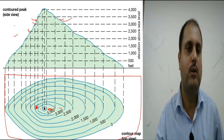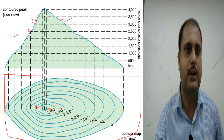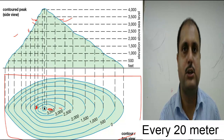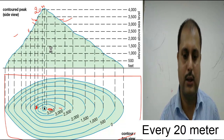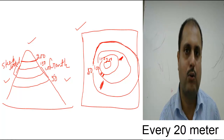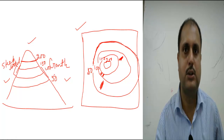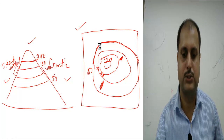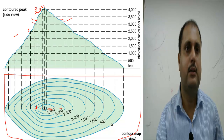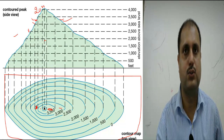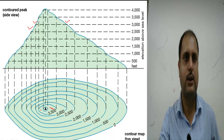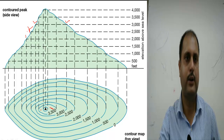Now, what is the index contour? On a standard map, a contour line must be drawn at every fixed interval — for example, every 20 meters. If you make a map following this standard spacing, those contour lines are called index contours. If you do not follow the standard spacing and draw according to your own wish, it is not a standard map.